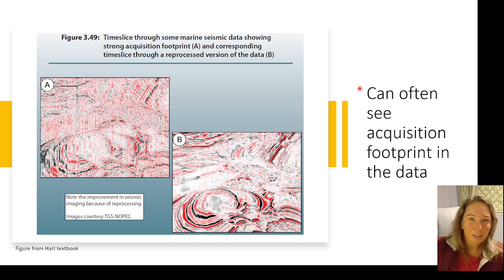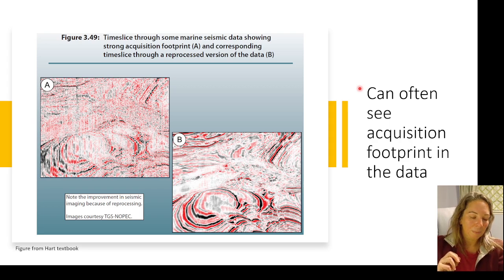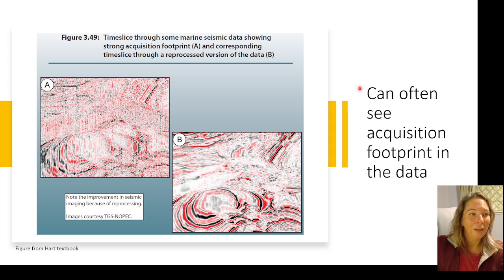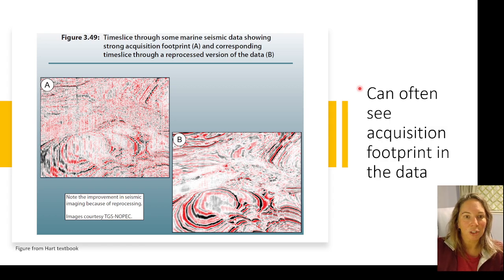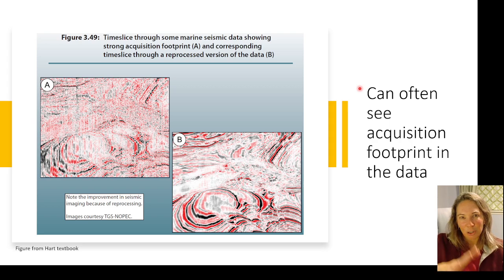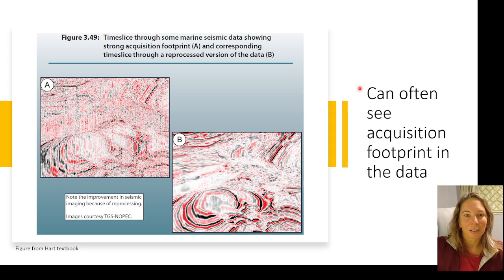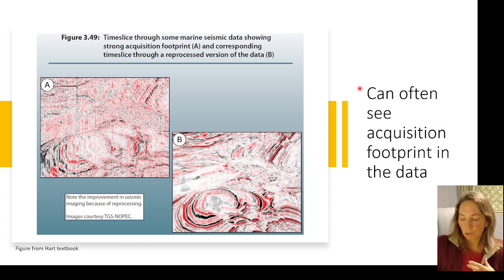Acquisition footprint refers to artifacts in our data that result from the acquisition geometry we chose. They are largely unavoidable and very commonly seen. If you're not aware of them, these patterns can sometimes be mistaken for geologic features. One of the first things I do when opening a seismic cube in my interpretation software is scroll through it and look for the acquisition footprint — to know how bad it is and how much I need to deal with it in my interpretation.